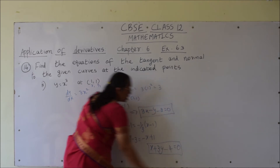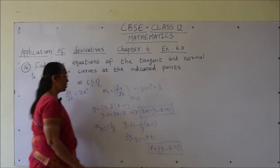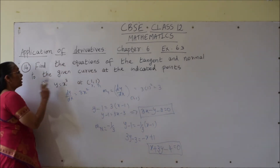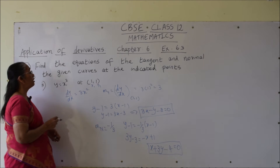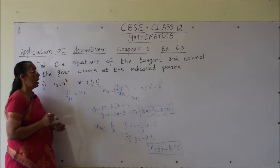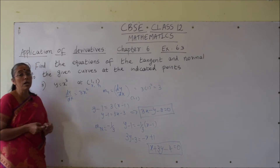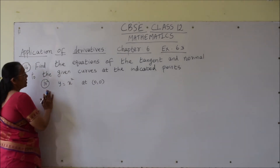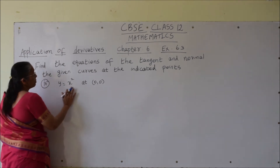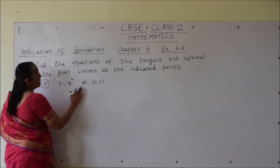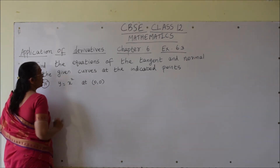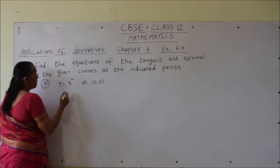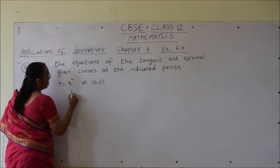So these are the equations of tangent and normal to the curve y equals x cube at the particular point (1, 1). Fourth bit: y is equal to x square at the point (0, 0). So for this curve we have to find the equation of tangent and normal.